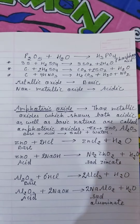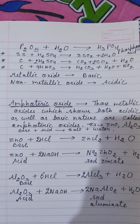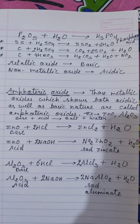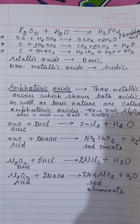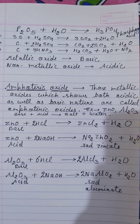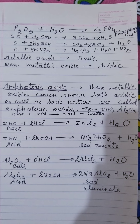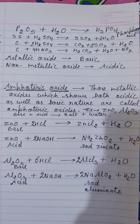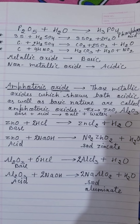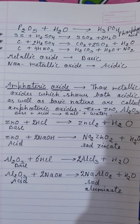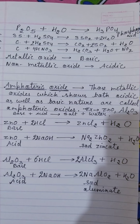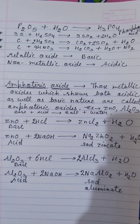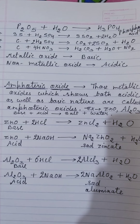Overall, all metallic oxides are basic in nature and all non-metallic oxides are acidic in nature. Now I have also written about amphoteric oxides. There are a few metallic oxides that are not only basic — they show both acidic and basic nature. Two examples are ZnO and Al₂O₃, which have the capability to show both acidic and basic nature, so they are called amphoteric oxides.